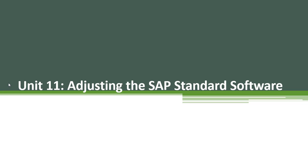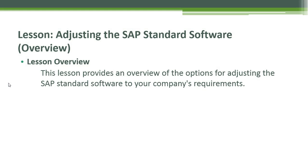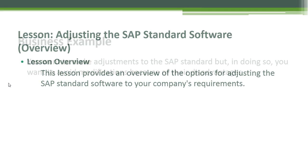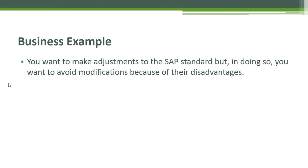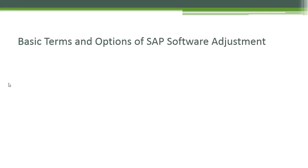Unit 11: Adjusting the SAP Standard Software. This lesson provides an overview of the options for adjusting the SAP standard software to your company's requirements. In doing so, you want to avoid modifications because of their disadvantages.